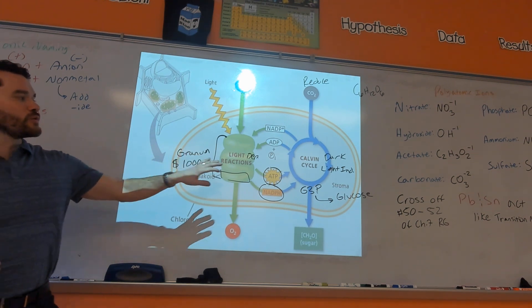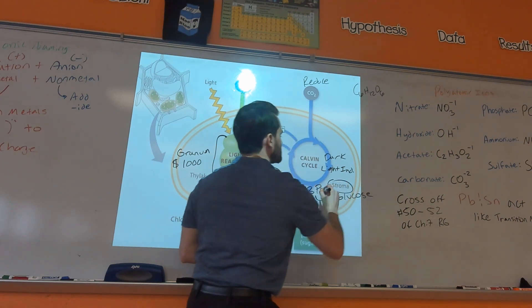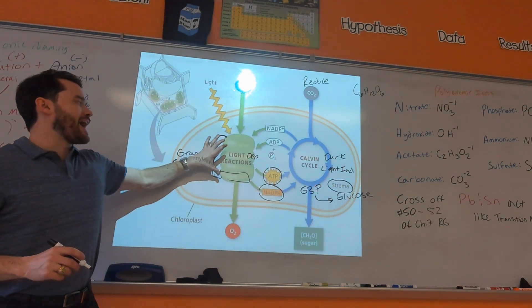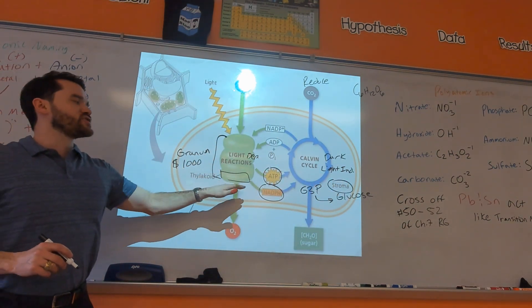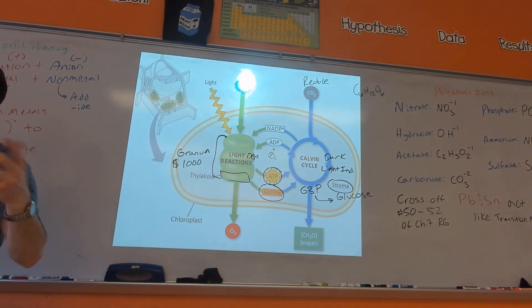The location of the Calvin cycle is the stroma — that's happening outside of the thylakoids. The stroma is like the matrix of the mitochondria; it's basically the cytoplasm of the chloroplast.